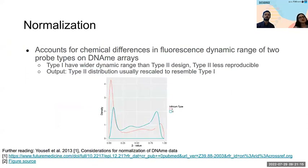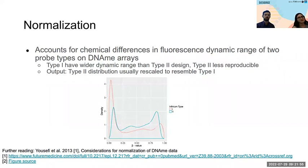The final processing step is normalization. There are two chemical types of probes on the array that function slightly differently. Type 2 probes generally have a smaller dynamic range of fluorescence than Type 1 probes, and Type 2 are generally less reproducible unless you normalize their distribution to look more like a Type 1 probe. That is often the intention of normalization, and we'll be conducting that today.